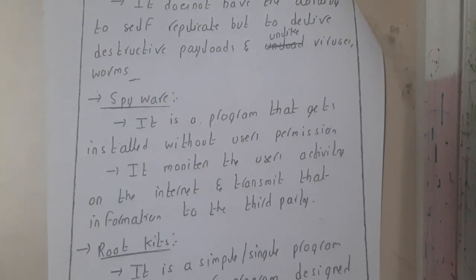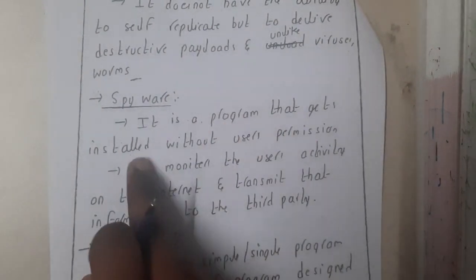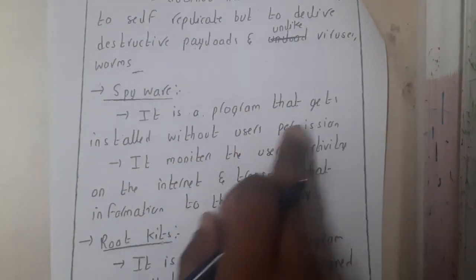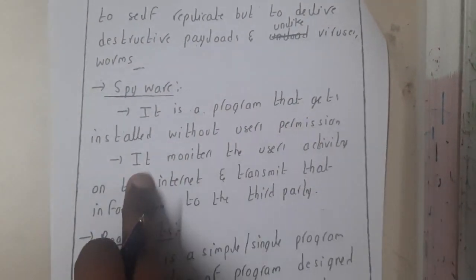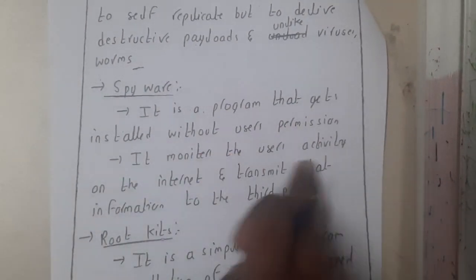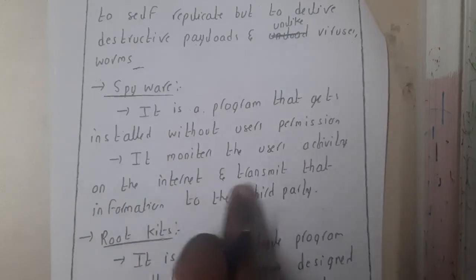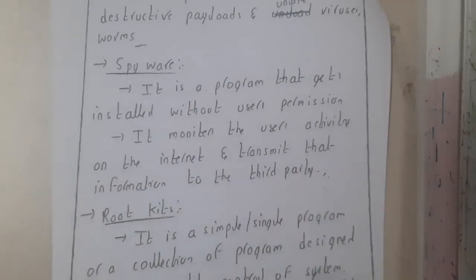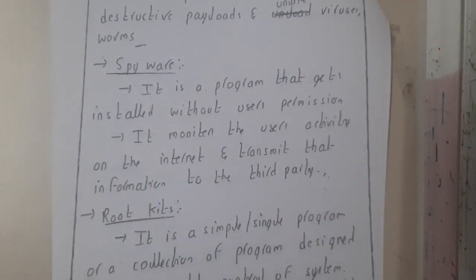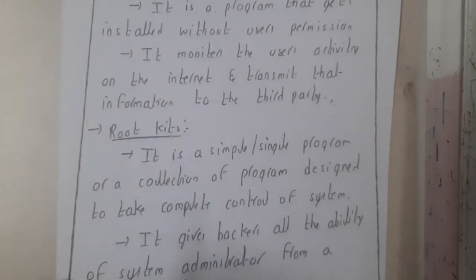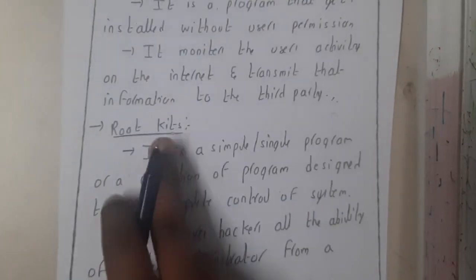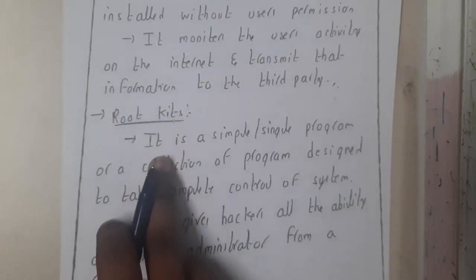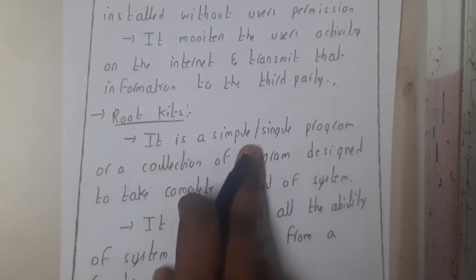Spyware — from the name itself you can understand. It is a program that gets installed without the user's permission. It monitors user activities on the internet and transmits that information to a third party. Basically, it is some kind of spy that observes your actions.